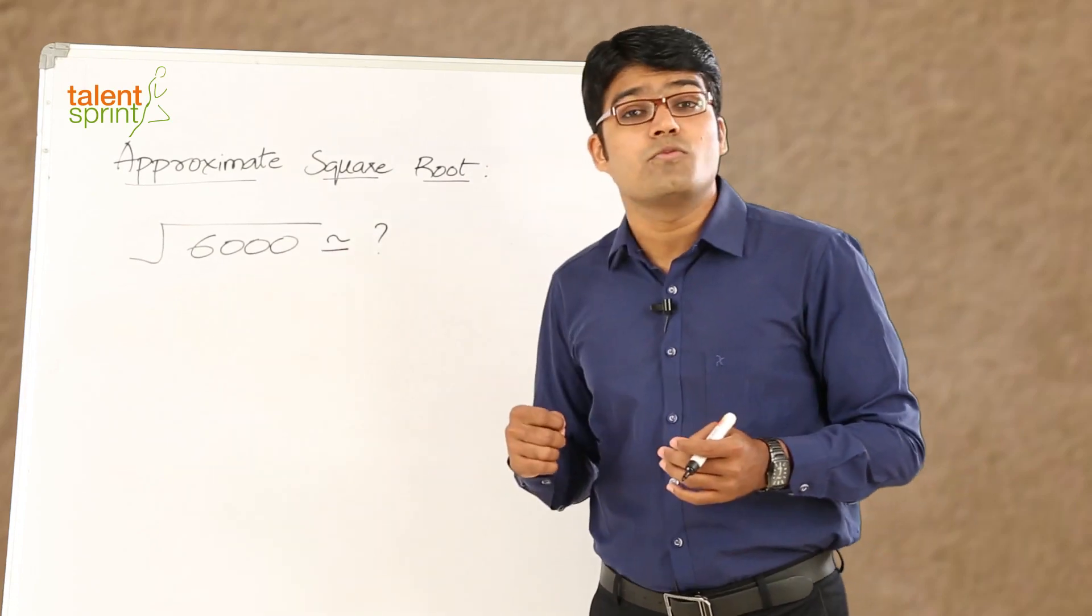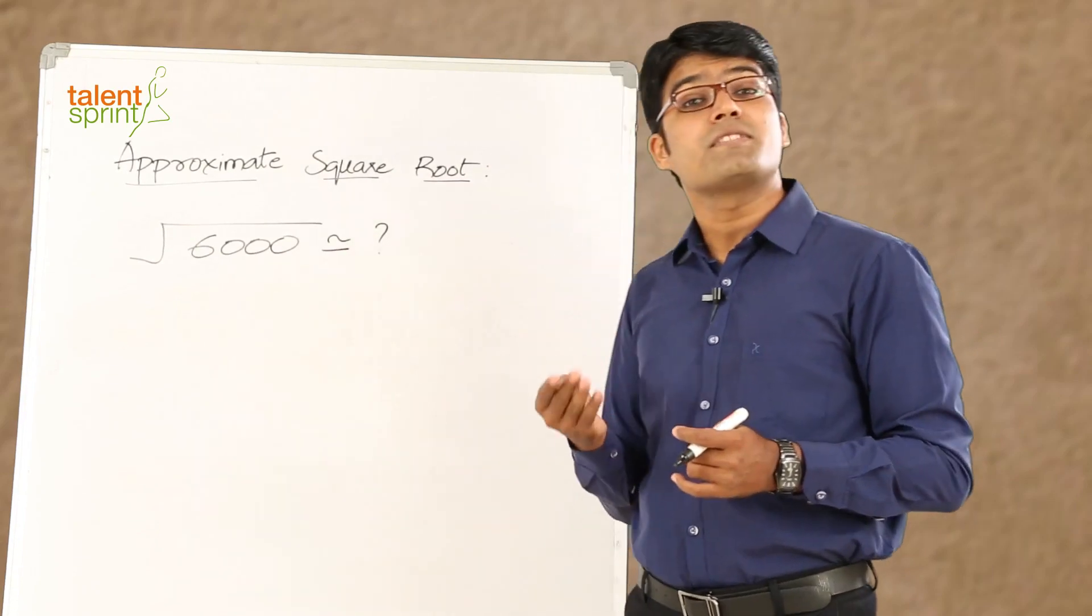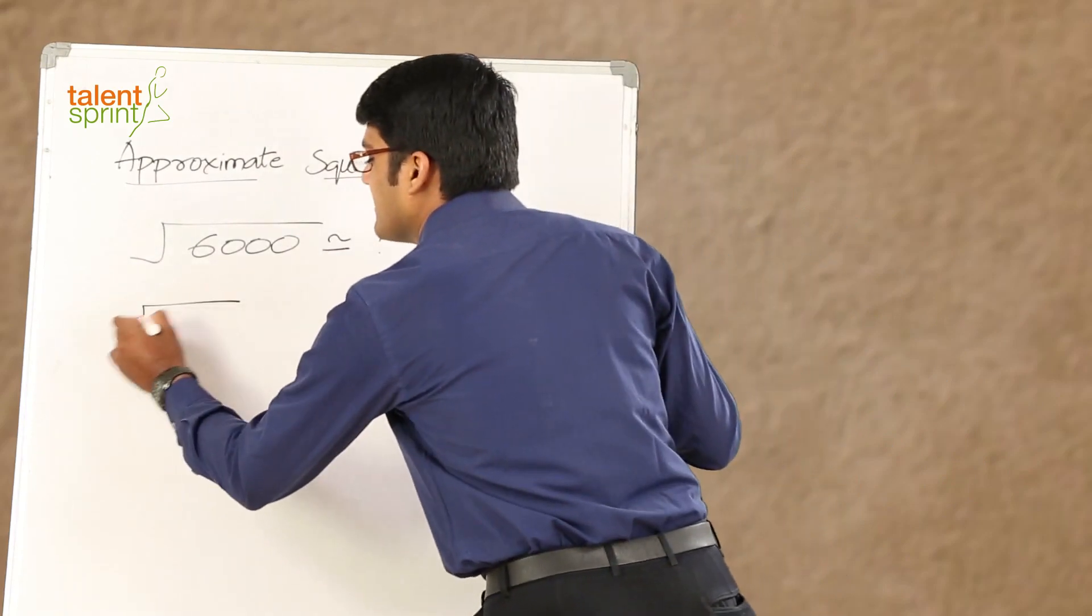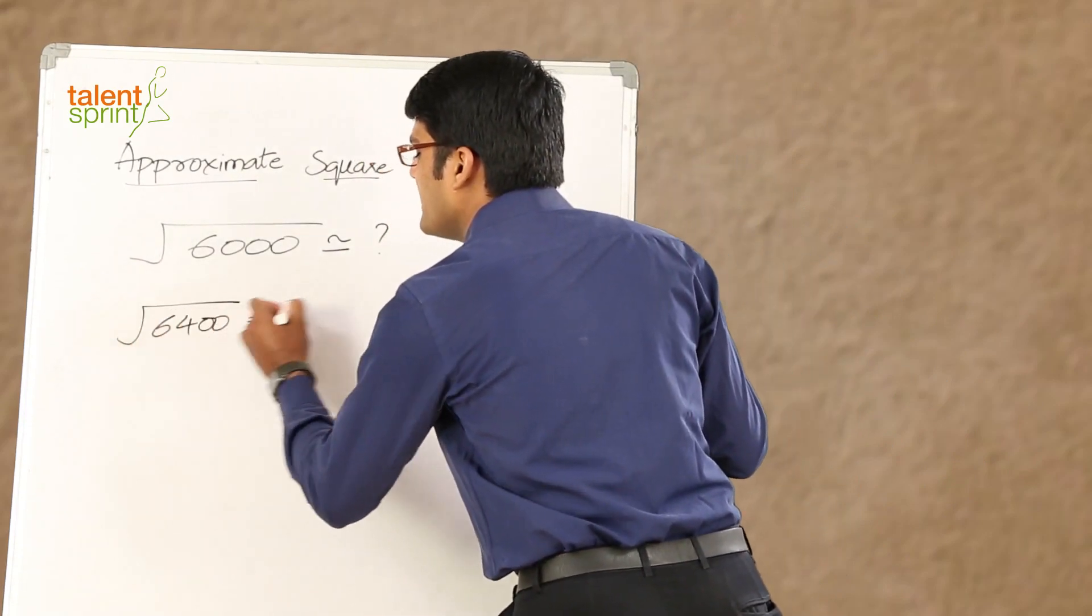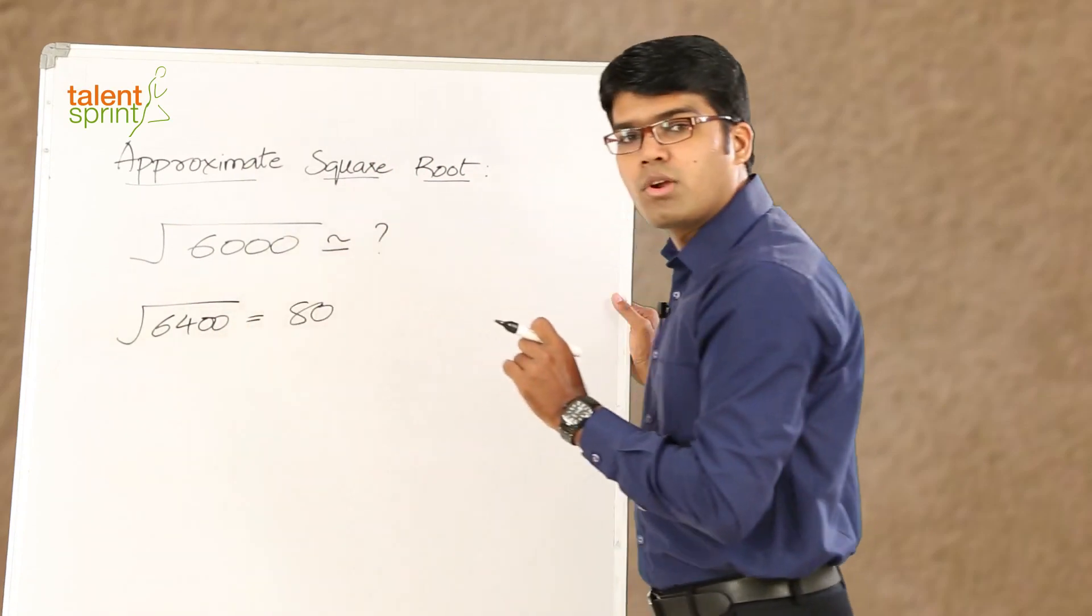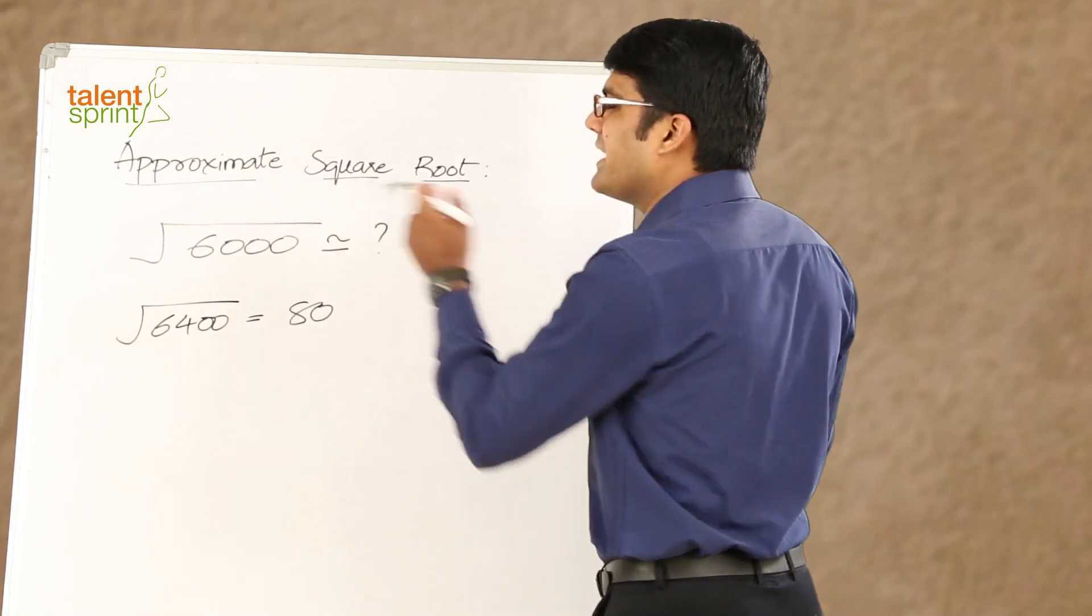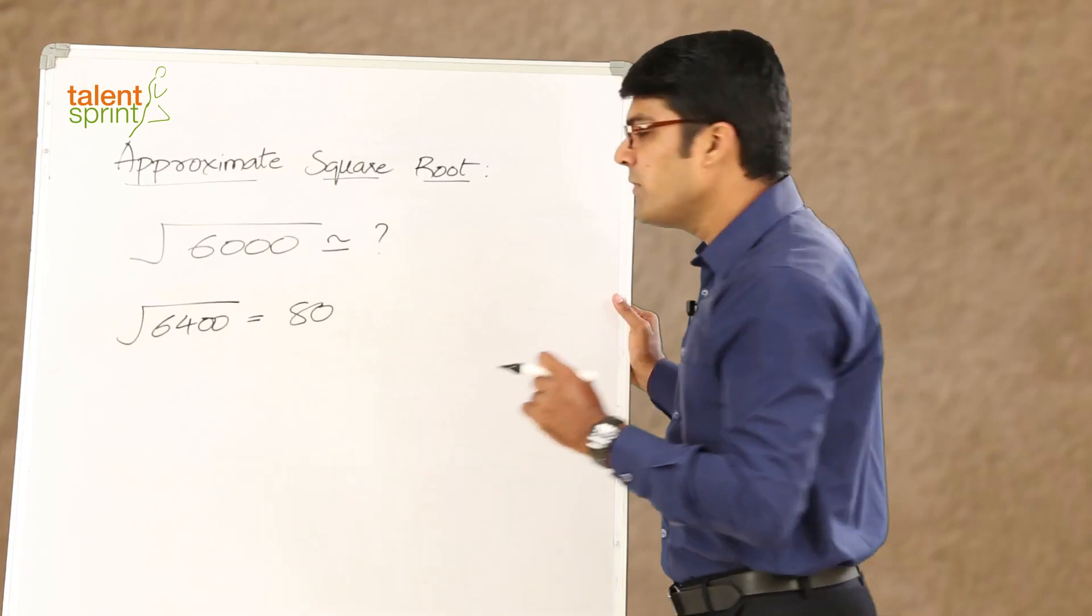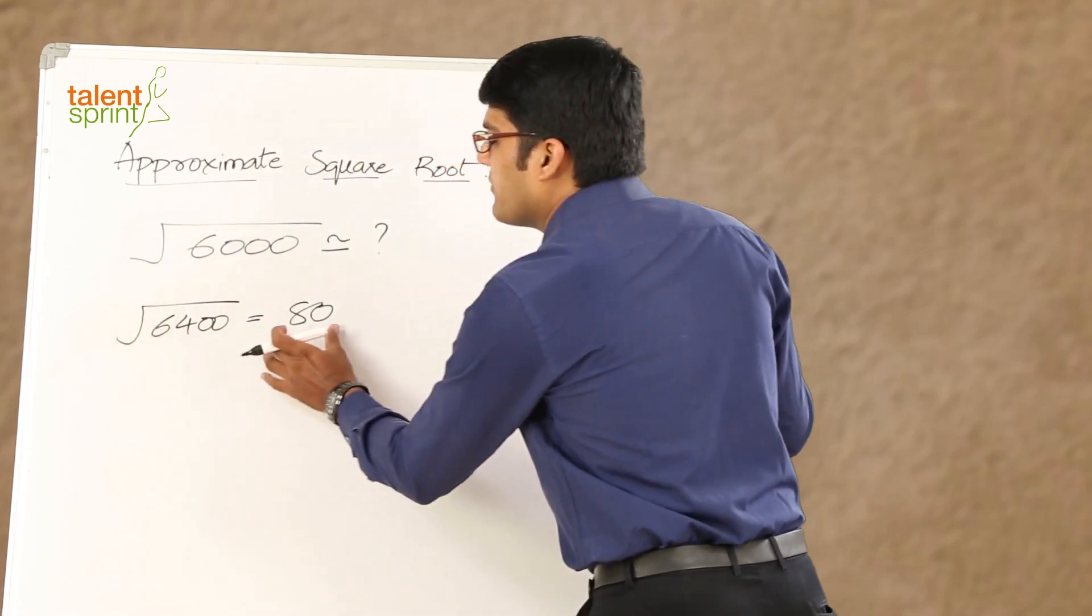here we know that 6,400 is a perfect square. Square root of 6,400 is 80. So, we can start working from 6,400, square root of 6,400 to get the square root of 6,000. What do we do? Now, square root of 6,400 is 80.